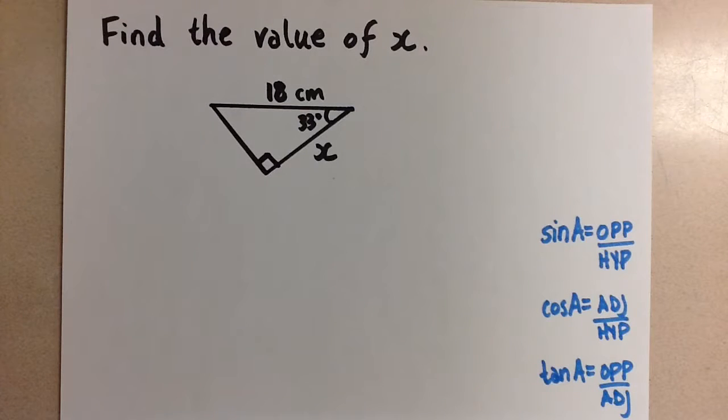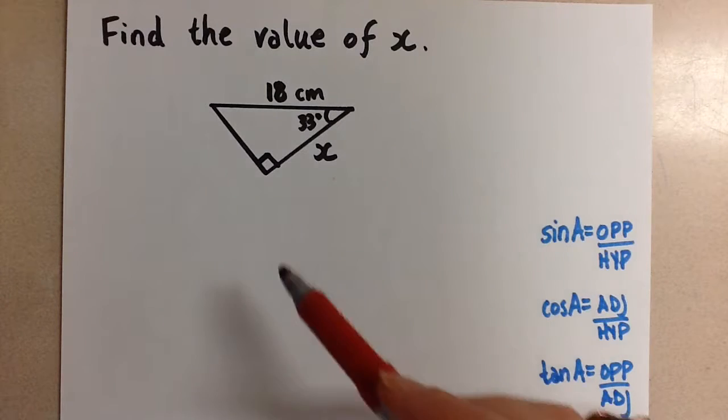Hi guys, Mrs. A here. Today we are looking at using the three primary trig ratios to solve for missing sides and angles in right angle triangles.